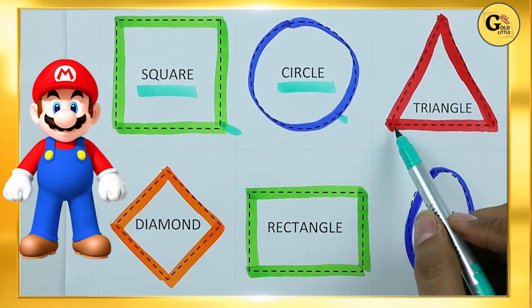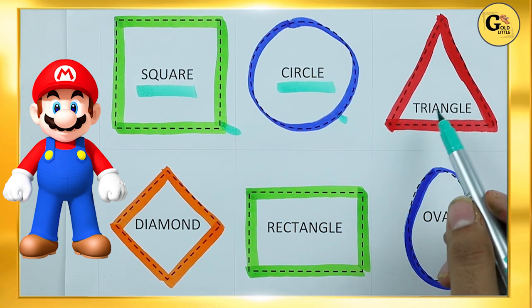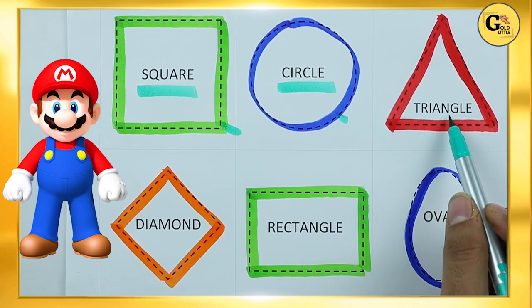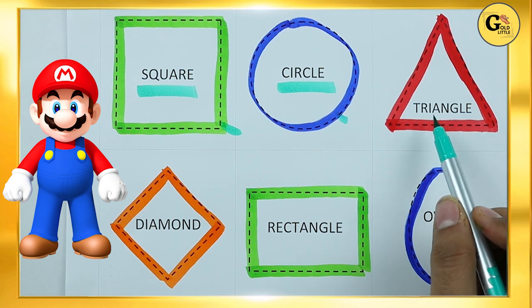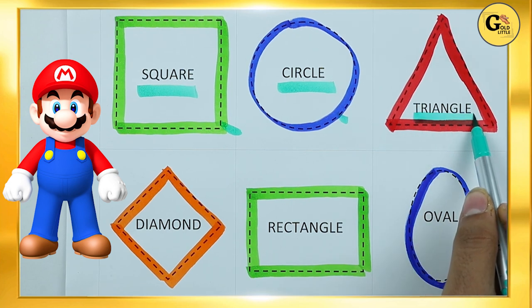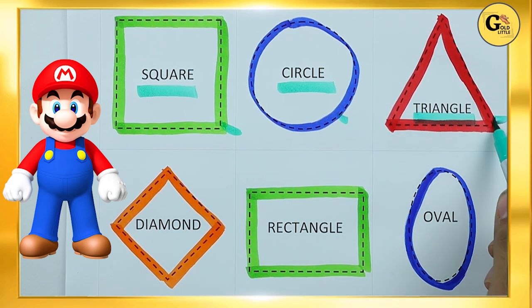Which shape is this? Triangle. T-R-I-A-N-G-L-E. It's a triangle with red color.